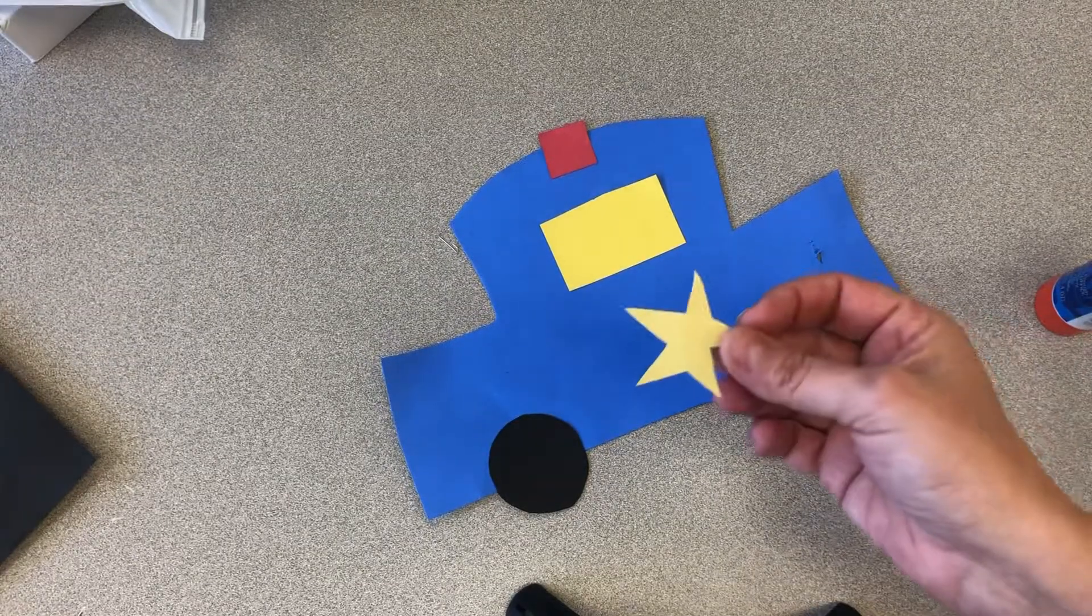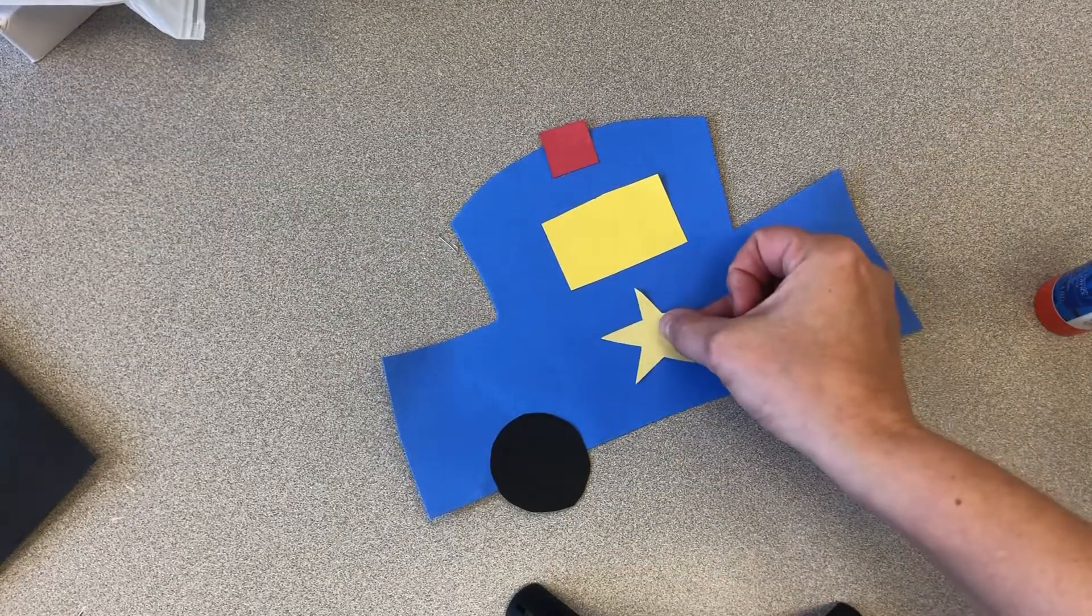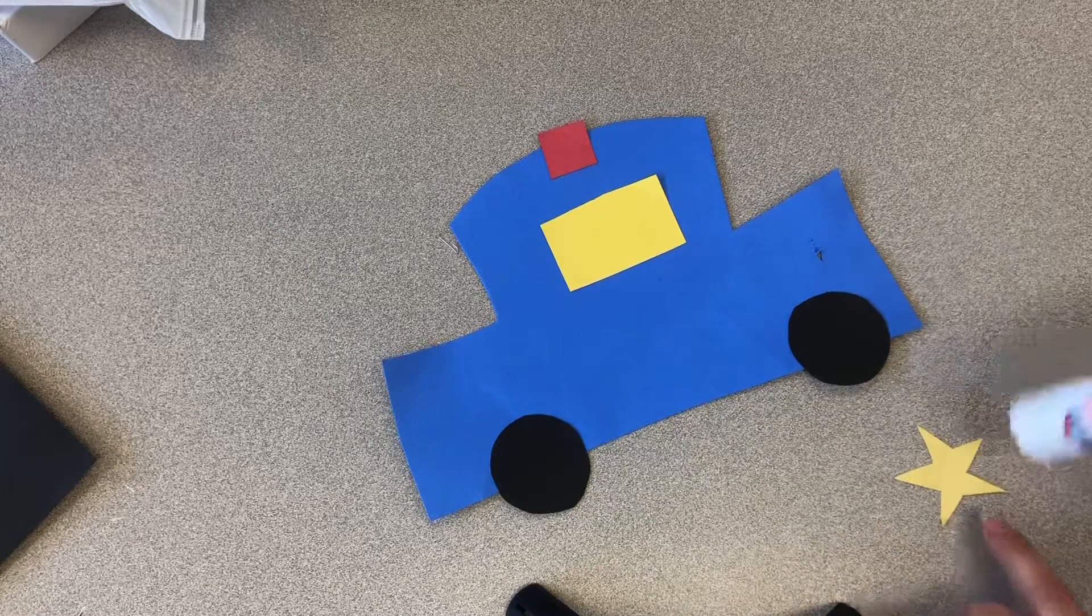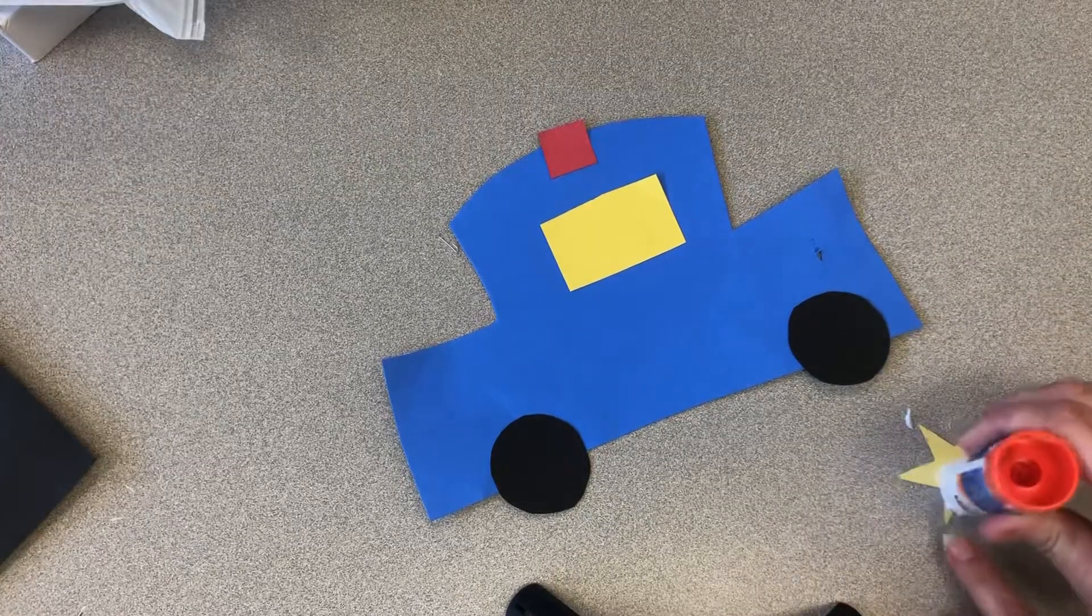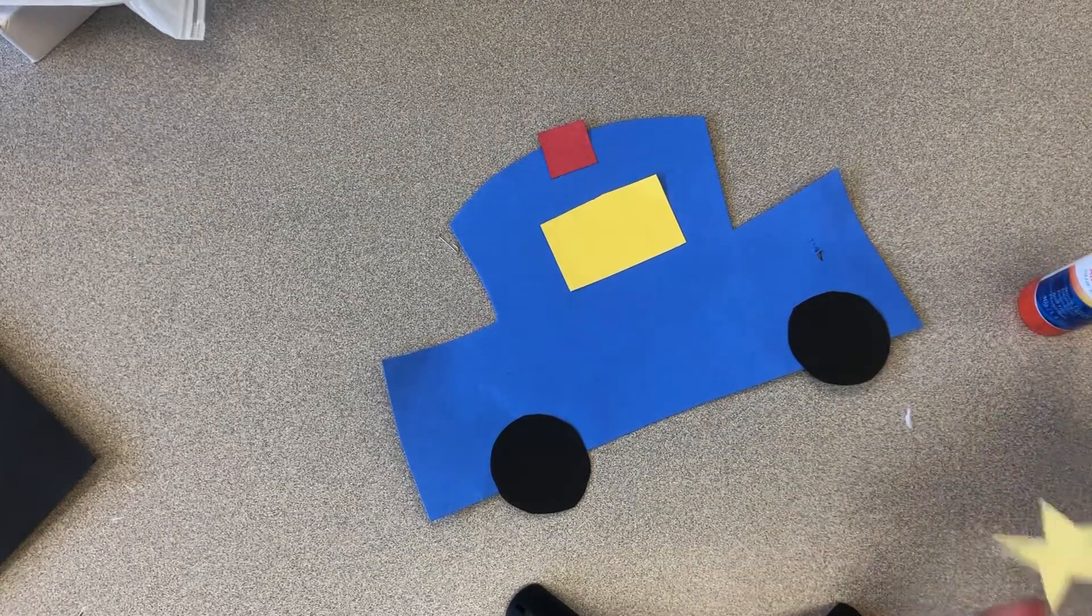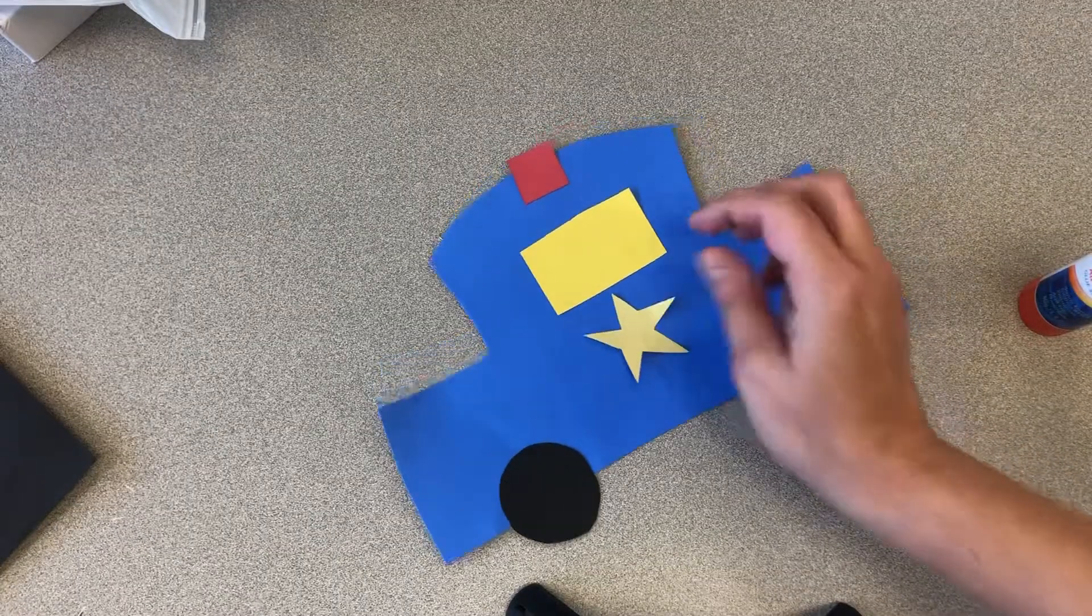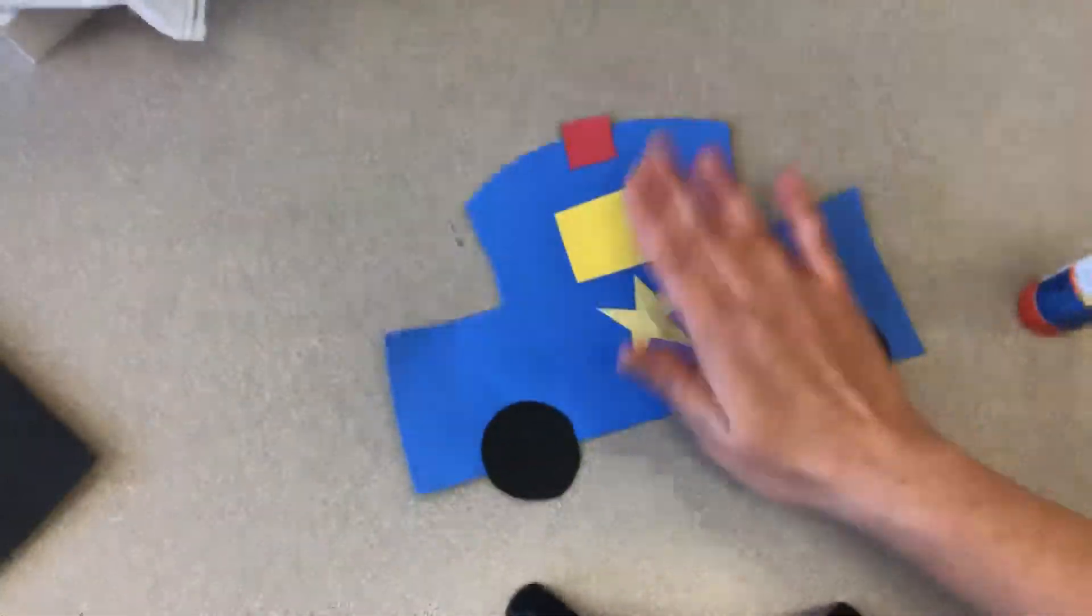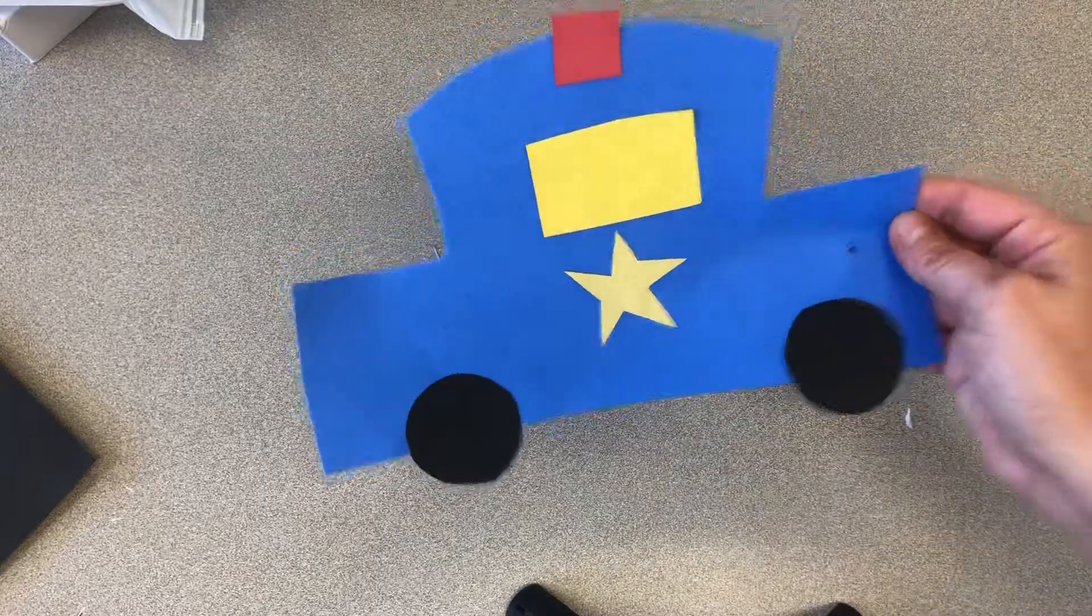Then lastly we are going to put our yellow star on the car so people know it's a police car. A little bit of glue on there and then we're gonna pat it down just like that. Perfect. That's our police car.